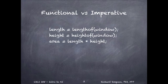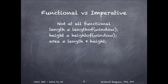Let's look at an example. Here is code you might see in any imperative programming language for calculating the area of a window. This is not functional programming. Each statement returns a value that gets stored in memory. We'll cover this in a moment, but storing something in memory is a side effect.